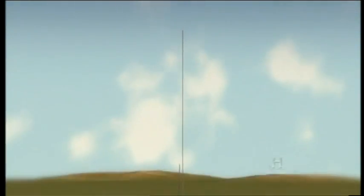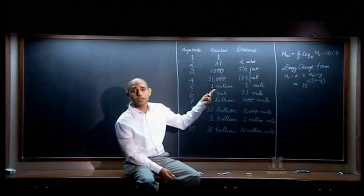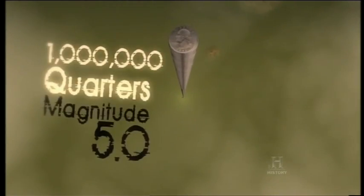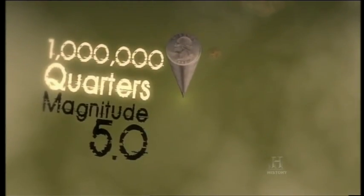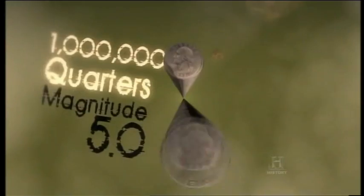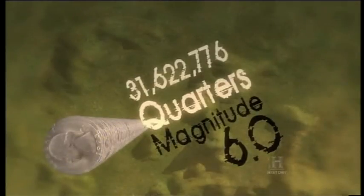Magnitude 4: 31,000 quarters — that's about 175 feet. A magnitude 5 earthquake is one million quarters on top of each other, a mile in height. Magnitude 6, that's about 31 miles. Magnitude 7, 1,000 miles.